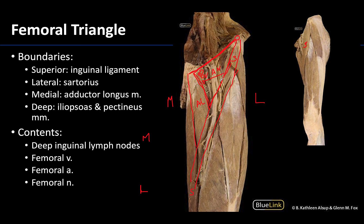Oftentimes during dissection, the femoral vein and artery are wrapped up tightly together in the femoral sheath, so upon first dissection or surgery it can be very hard to differentiate between the vein and the artery. Understanding which one is more medial — the vein — and which is more lateral — the artery — can help to differentiate them. That's where really understanding your anatomy can be helpful.